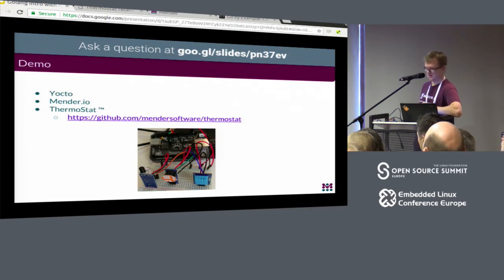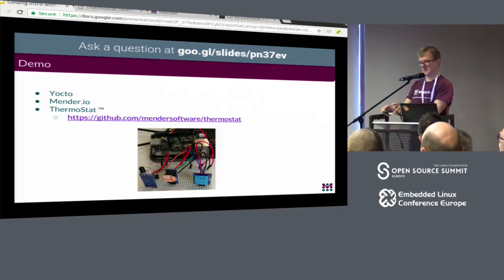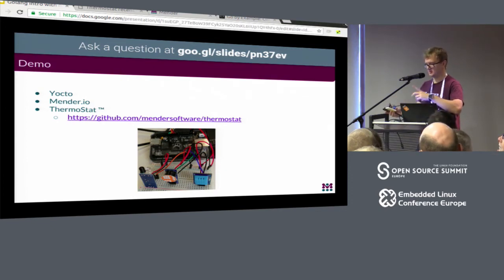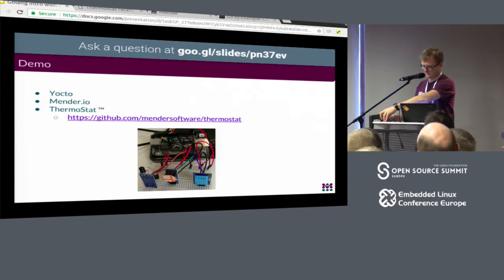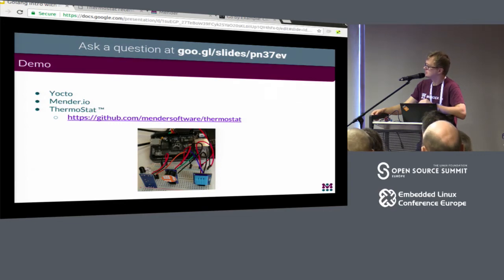We still have about 10 minutes, so I'll show a demo of an embedded Go application. I have a BeagleBone here with a DHT11 temperature and humidity sensor, an infrared distance sensor, and a small buzzer. I'm running an application that exports all the sensor readings through a web interface.